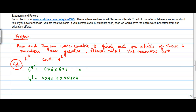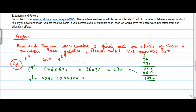Now 6 to the power 4 can be written as 36 into 36. When you do the multiplication, it's not simple, so let me do this. This gives us 1296.